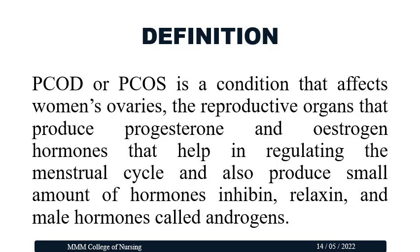PCOD or PCOS is a condition that affects the woman's ovaries — the reproductive organs that produce progesterone and estrogen hormones, which help regulate the menstrual cycle. They also produce small amounts of hormones including relaxin and male hormones called androgens. This condition affects the woman's ovaries, the production of the ovum, as well as the regulation of hormones. These hormone levels are also affected in cases of PCOD and PCOS.